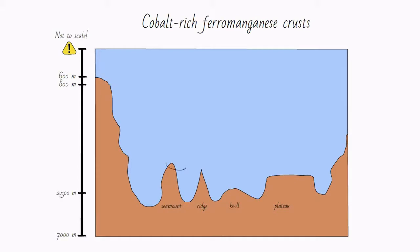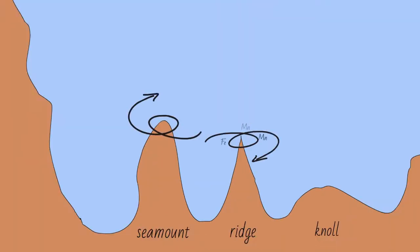These crusts are formed in areas of high turbidity, which usually occurs at peaks of seamounts, ridges, and other elevations. These underwater rises result in eddies that can trap nutrients and metals, which will eventually deposit on the rocks.